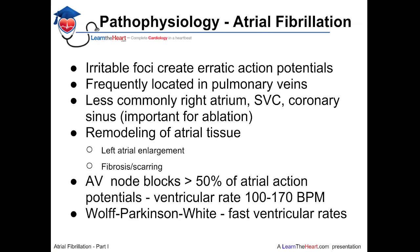The AV node blocks about 50% of the action potentials that occur from the atrium. If 400 to 600 atrial action potentials all got to the ventricles, this rhythm would be very hemodynamically unstable and essentially equivalent to ventricular fibrillation. Fortunately, the AV node blocks about 50%, resulting in a ventricular rate of about 100 to 170 beats per minute. Patients with Wolff-Parkinson-White Syndrome can conduct some of these atrial action potentials not through the AV node but through an accessory pathway connecting the atrium directly to the ventricles. This accessory pathway can conduct much faster, so a patient with Wolff-Parkinson-White and atrial fibrillation might get between 200 and 250 beats per minute reaching the ventricles. This will be discussed further in the management section under special situations.